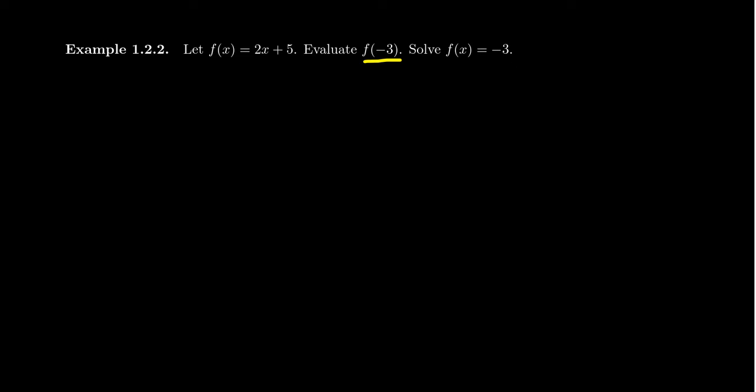Let's show how one evaluates a linear function. If you want to find f(-3), you're just going to replace x with -3 in your formula and then arithmetically simplify. Two times -3 gives us -6, plus 5 gives us -1. That is the function evaluation.